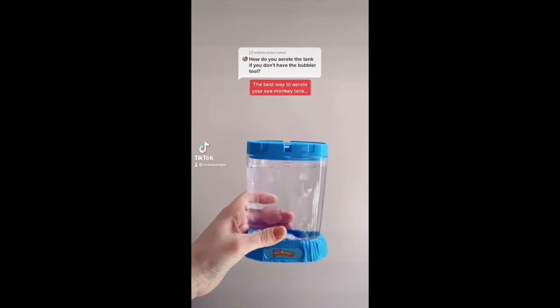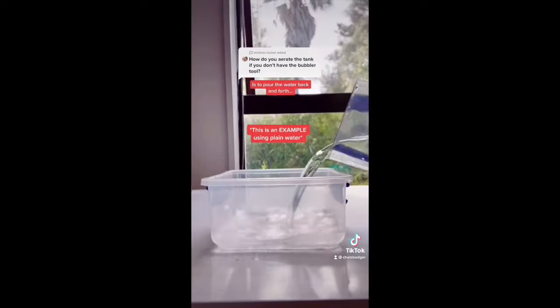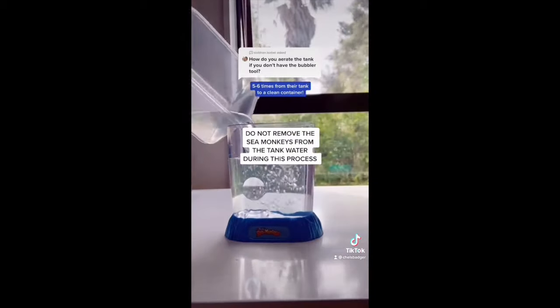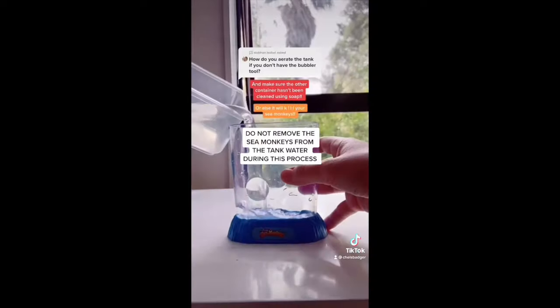The best way to aerate your sea monkey tank if you don't have the bubbler tool is to pour the water back and forth five to six times from their tank to a clean container. Make sure the other container hasn't been cleaned using soap.